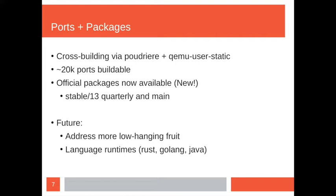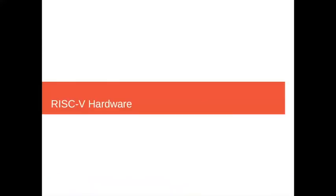In the future, there are still lots more ports and packages that require small tweaks or patches to make them work on RISC-V, and the larger items would be adding support for more language runtimes — Rust, Go, Java, and similar — because that enables a whole other set of software. That's mainly where we are on the software side.